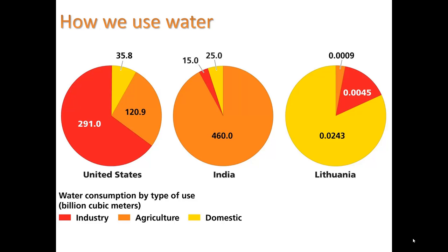How we use water really depends on how developed your country is. The U.S. uses most of its water for industrial uses, and most of that water is used for cooling electric power plants where they're burning some kind of fuel to generate electricity. The next biggest part is agriculture, then domestic use — showering, washing clothes, all that kind of thing. India uses a much greater percentage for agriculture. Worldwide, about 85 to 90% of water is used for agriculture.